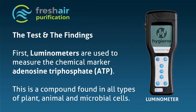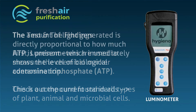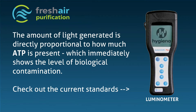First, luminometers are used to measure the chemical marker adenosine triphosphate, ATP. This is a compound found in all types of plant, animal, and microbial cells. The amount of light generated is directly proportional to how much ATP is present, which immediately shows the level of biological contamination.